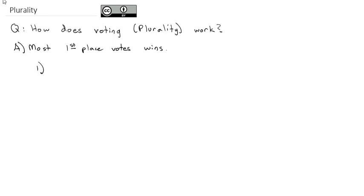To set this up, we're going to use what is called a preference ballot a lot in this unit. What a preference ballot does is the voter will rank their choices in order of preference.